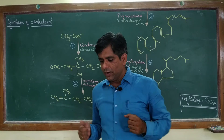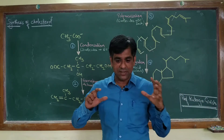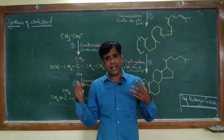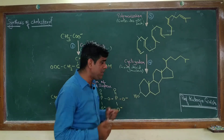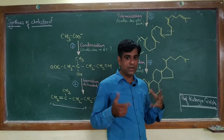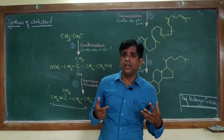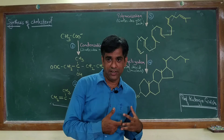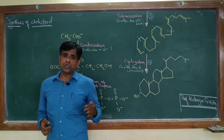Cholesterol biosynthesis starts with acetyl CoA — just like fatty acid synthesis — but here the cell has a different plan for this acetyl CoA. This 27-carbon compound is built starting from a simple two-carbon precursor, acetate, involving the intermediate formation of a five-carbon intermediate called isoprene. Isoprene units are intermediates in a number of lipid molecules with a variety of biological functions, which we'll cover in upcoming videos.